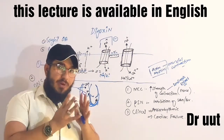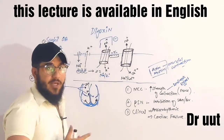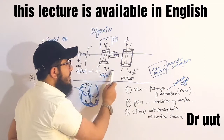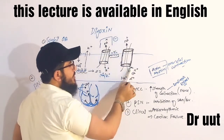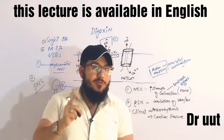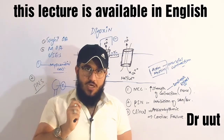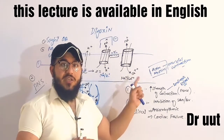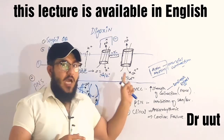Digoxin inhibits this pump, so sodium is not moved out and sodium concentration inside the cell increases. Because in this contractile cell, calcium plays a very important role in the contraction via actin, myosin, troponin, and tropomyosin. When calcium concentration increases, contraction increases automatically. This is the mechanism of action.